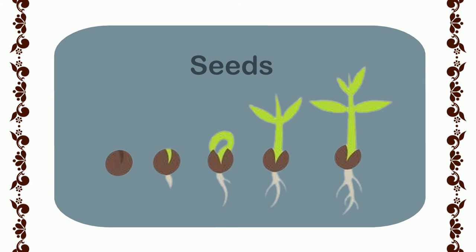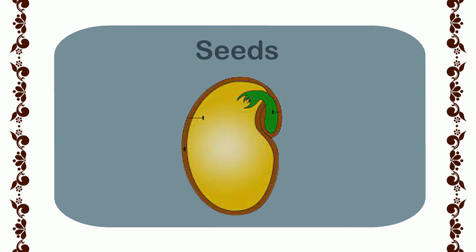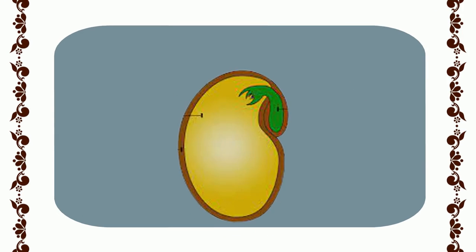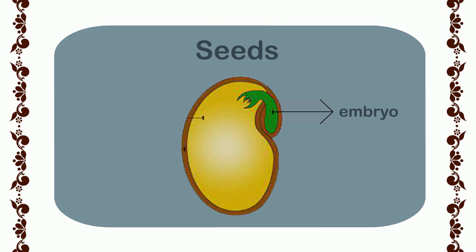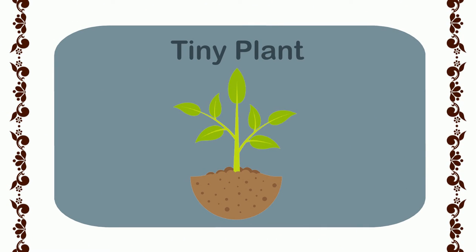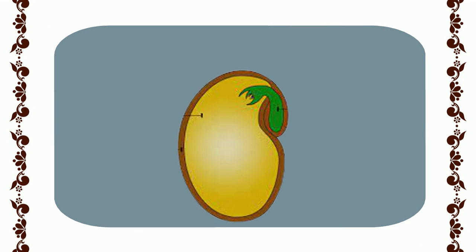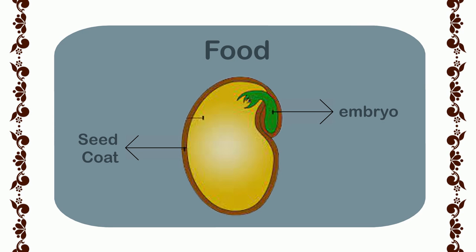Seeds have a baby plant hidden inside them. Seeds also have food stored inside them for the baby plant, and the baby plant is known as an embryo when it is inside the seed. Looking at a diagram of a seed: the covering or coat of the seed, which protects it, is called the seed coat. The tiny plant inside is the baby plant or embryo, and the stored material is the food that the seed has stored for the embryo.